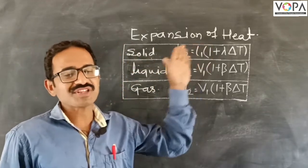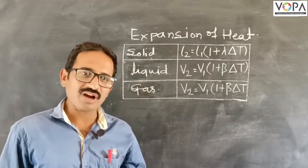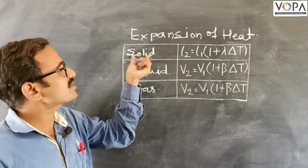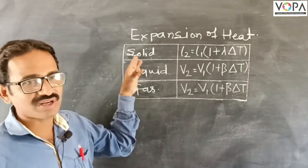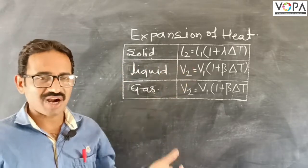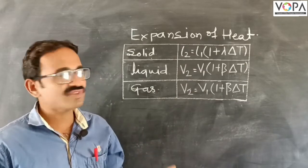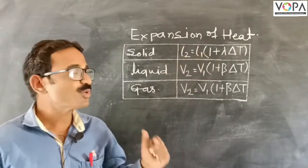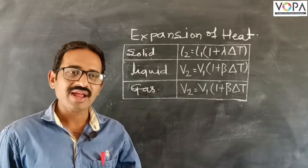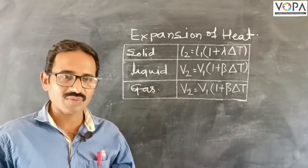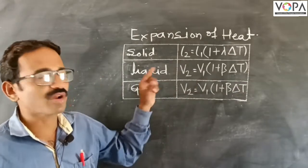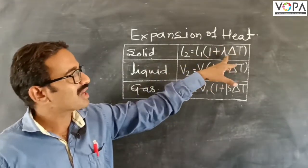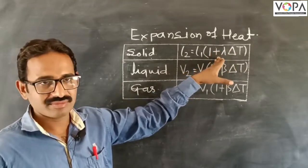Now we study the expansion of heat. Every substance, if we apply heat to any substance, then it will expand. Suppose the first substance is a solid. If we apply heat to the solid, then it will expand — its length or width will increase. The formula will be L2 equal to L1 in bracket 1 plus lambda times delta t, where lambda is the constant of heat for solids.